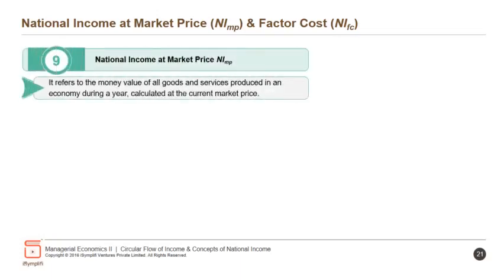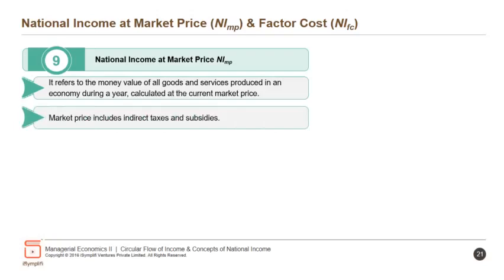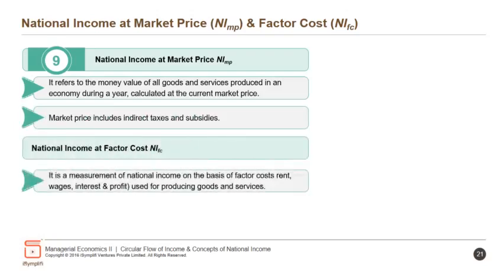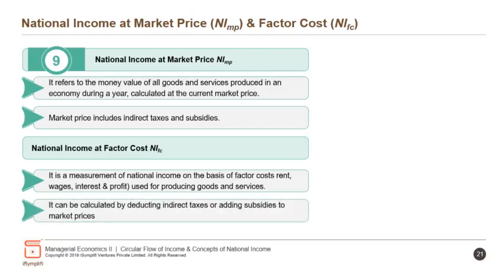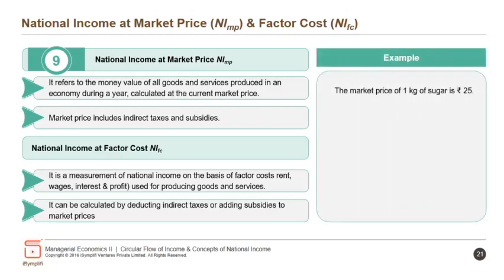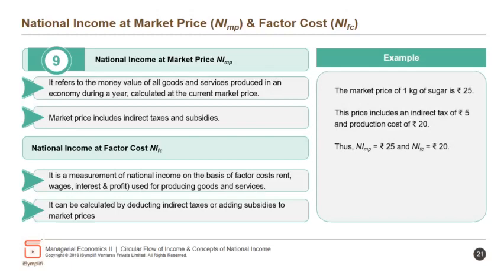National income at market price refers to the money value of all goods and services produced in an economy during a year, calculated at the current market price. Market price includes indirect taxes and subsidies. National income at factor cost is a measurement of national income based on factor cost — rent, wages, interest and profit — used for producing goods and services. It is calculated by deducting indirect taxes or adding subsidies to market prices. For example, if the market price of 1 kg of sugar is Rs. 25, including an indirect tax of Rs. 5 and production cost of Rs. 20, then NIMP = 25 and NIFC = Rs. 20.